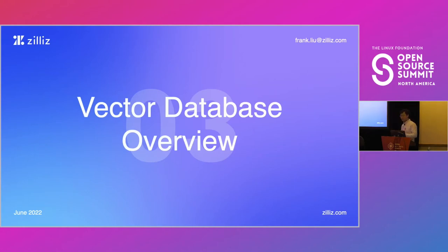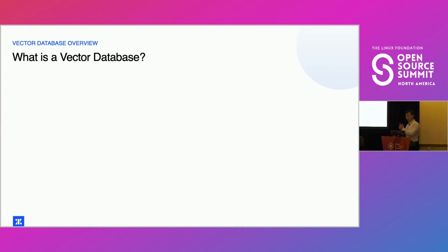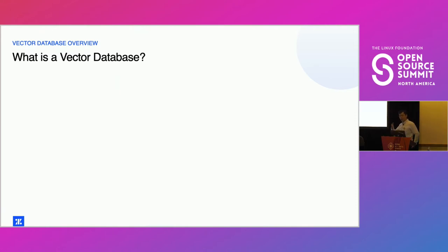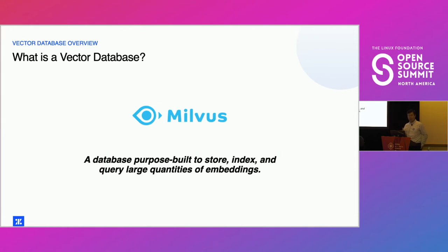Now the fun part — what is a vector database? A vector database is a database purpose-built to store, index, and query large quantities of embeddings. The gentleman answered it well: it's essentially data indexing allowing you to do nearest neighbor lookups and similar searches. These embeddings correspond to pieces of unstructured data — for example, two images of German shepherds would be very close to each other in embedding space.